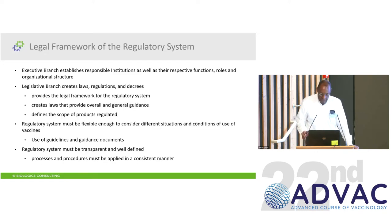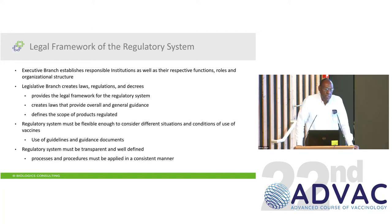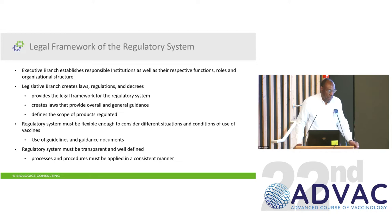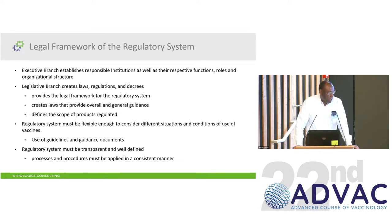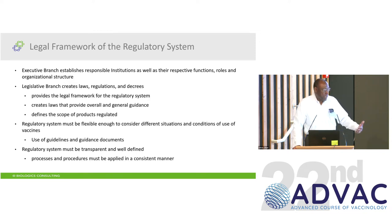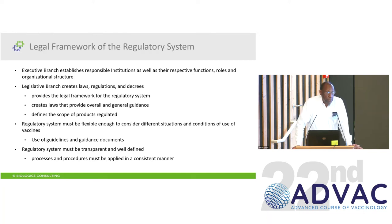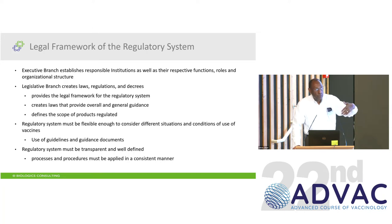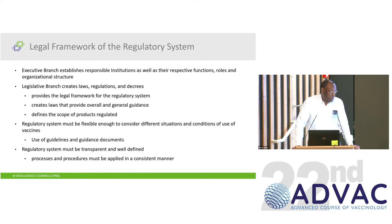One of the fundamental criteria for a national regulatory authority is to have a legal framework. Without one, how do you enforce anything? In the United States, the executive branch — starting with the president — establishes the responsible institutions and their respective functions. The FDA is part of the executive branch through the Department of Health and Human Services, which most countries call the Ministry of Health.